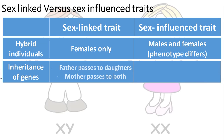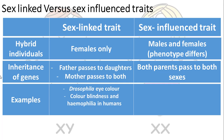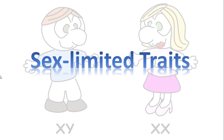Regarding inheritance: in sex-linked traits, the father passes genes to daughters and the mother passes to both sons and daughters. In sex-influenced traits, both parents pass genes normally to both sexes of their offspring. Examples of sex-linked traits include Drosophila eye color, color blindness, and hemophilia. Examples of sex-influenced traits are horns in cattle and baldness in humans.